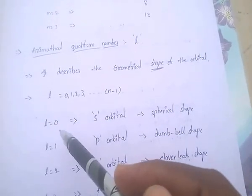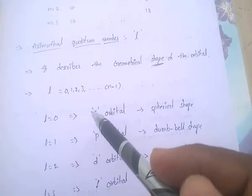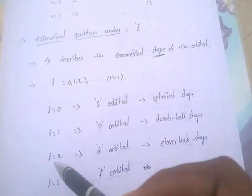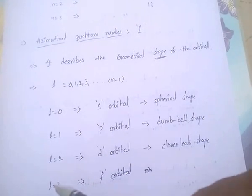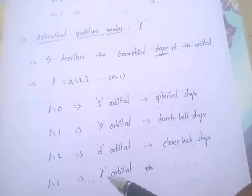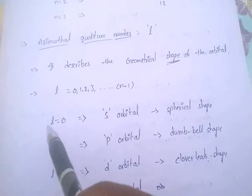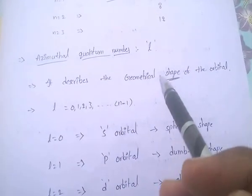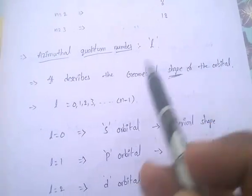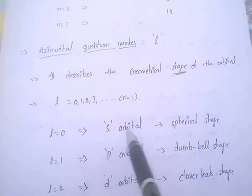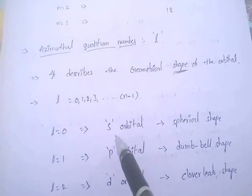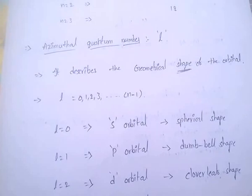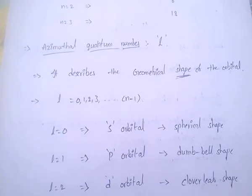If l=0, the orbital is an s orbital. If l=1, it is a p orbital. l=2 gives the d orbital, and l=3 gives the f orbital. The shape described: if l=0, the s orbital has a spherical shape. The shape of the s orbital is spherical — this is very important.